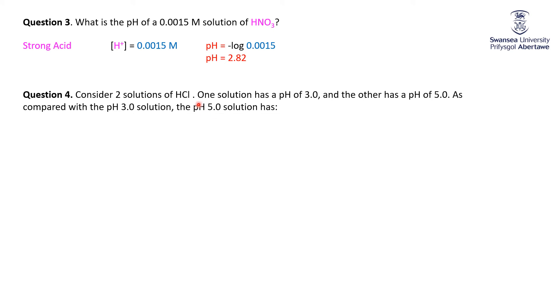So the two solutions of HCl, strong acid. One has a pH of 3, the other is a pH of 5. Compared to the pH 3, the pH 5 solution has. And these are comparisons of the H-plus concentrations and the actual answers.